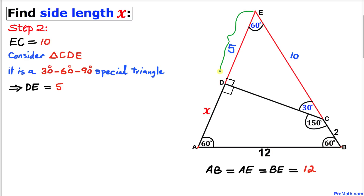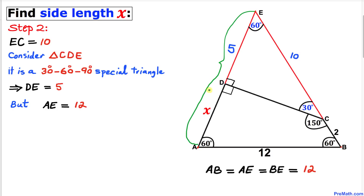We know that side length DE is 5 units, and the whole side length AE is 12 units. Side AE equals x plus DE, so we can write: AE = x + 5 = 12.